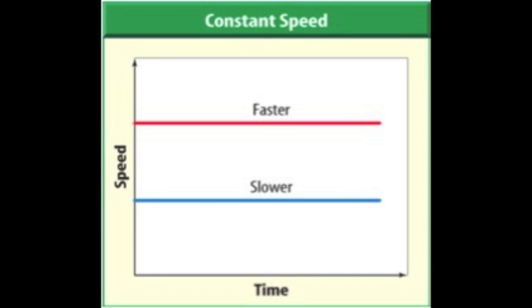So on a speed-time graph, the constant speed is shown as a straight line. Now you might remember on a position-time graph, the constant speed was shown as a line that slanted up towards the right. So in the next video, we're going to compare speed-time graphs and position-time graphs to give you a comparison. But if you read the graph carefully and pay attention to what's happening over time, you will find it easier to determine what's happening.